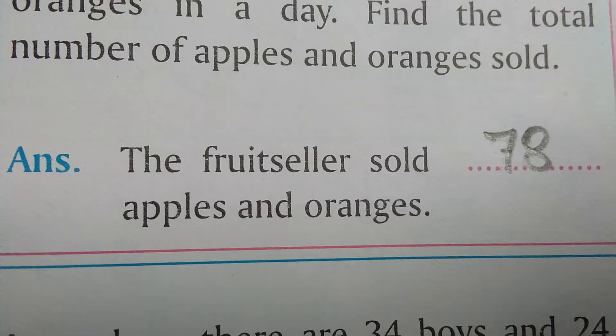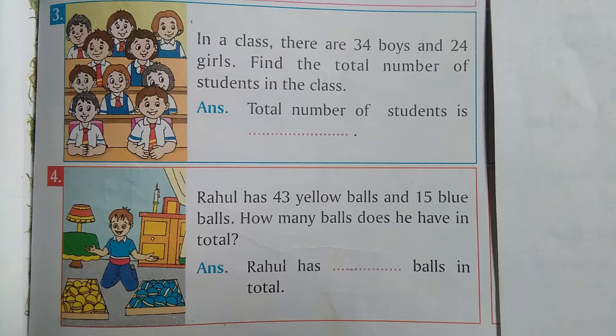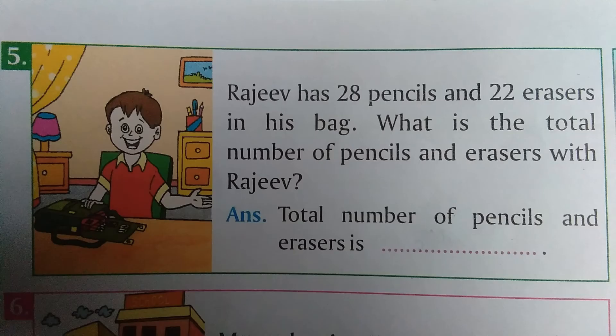So finally our answer is: the fruit seller sold 78 apples and oranges. Question number 3 and question number 4 — practice at home. Let's move on to the next question.